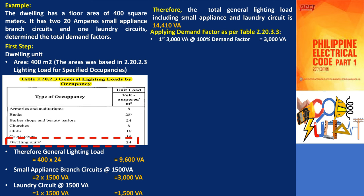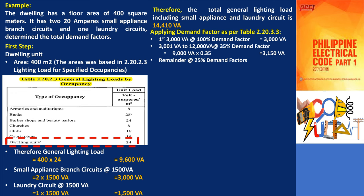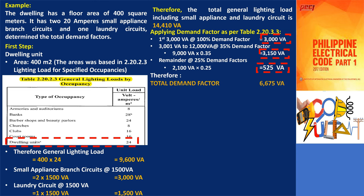Apply the demand factor based on table 2.20.3.3. The first 3,000 volt amperes are at 100% demand factor. The range from 3,001 to 12,000 volt amperes is at 35% — 9,000 VA times 0.35 gives 3,150 VA. The remaining volt amperes from 12,001 to 14,100 are at 25% demand factor — 2,100 VA times 0.25 equals 525 VA. The total demand is 3,000 plus 3,150 plus 525, therefore the total demand factor for general lighting load in this example is 6,675 volt amperes.